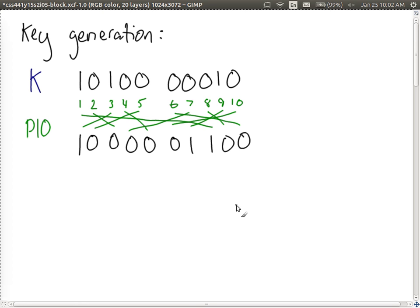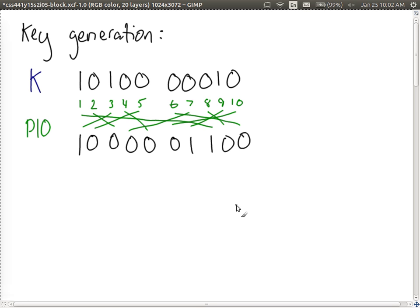This is the same idea as the rail fence or row-column cipher from classical cryptography — it just rearranges or permutes the bits. P10 is fixed, defined as part of Simplified DES (and similarly in real DES). Whenever we take these 10 bits in, we always mix them in the same way. On its own this is not secure since an attacker who knows the permutation can reverse it, but when combined later with substitution operations, the final output is considered secure.